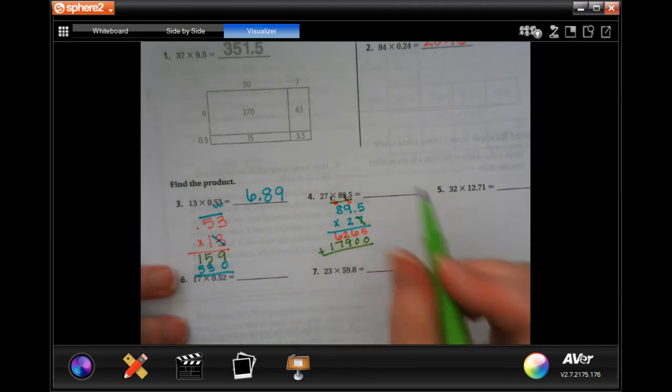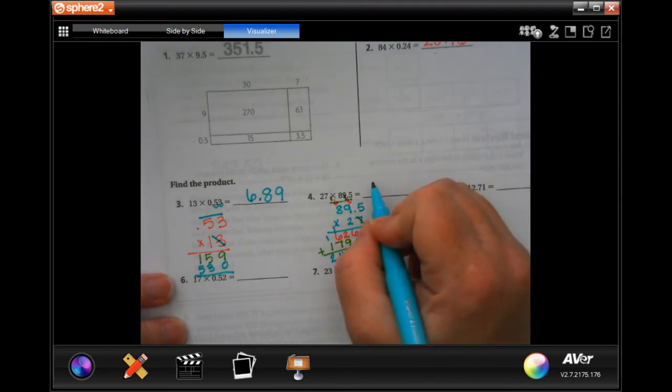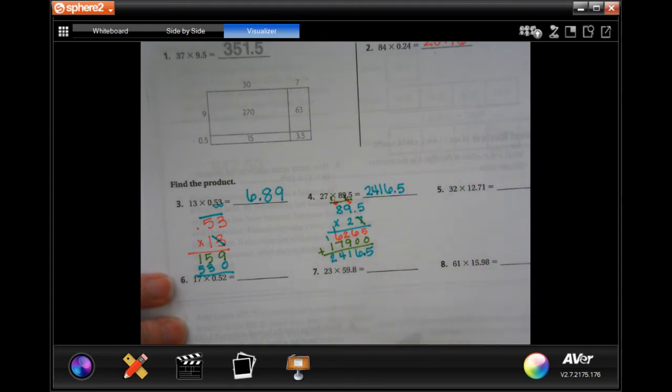Maybe it would be better to do this on scrap paper, guys. So I'm going to add straight down. 5, 6, 11, carry 1, 14, and 2. And then I need to go in just one place. That's where my decimal is there. So 2, 4, 1, 6, 25.